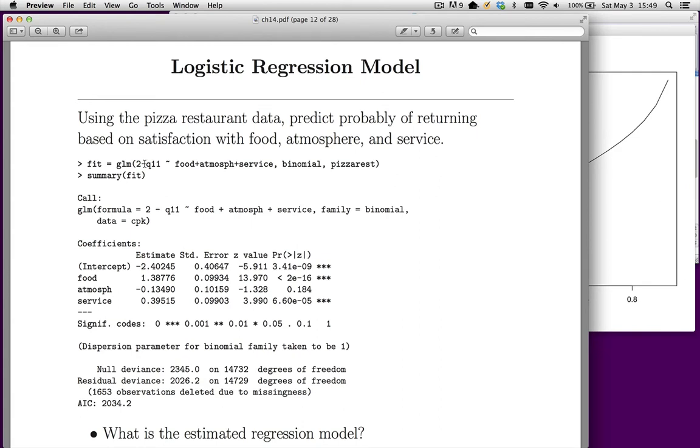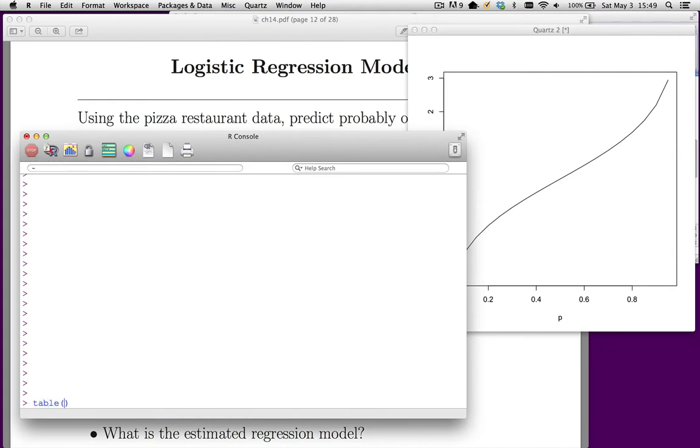The values for this variable—if we look at this dataset, if I do a table, it's called pizzarest$Q11—you notice it takes two values: one and two. One means yes, two means no.